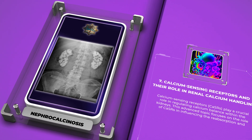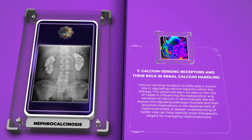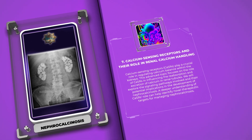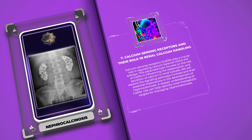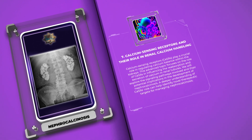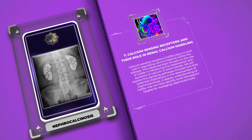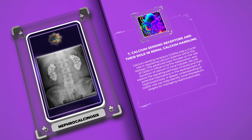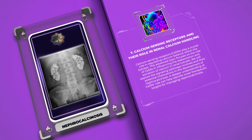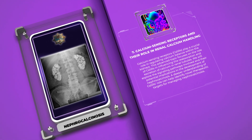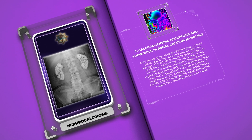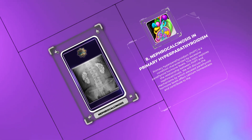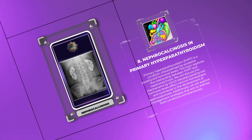Calcium sensing receptors (CaSRs) play a crucial role in regulating calcium balance within the kidneys. This topic focuses on the role of CaSRs in influencing the reabsorption and excretion of calcium in renal tubules. We will explore the signaling pathways involved and their potential implications in the development of nephrocalcinosis, helping identify novel therapeutic targets.